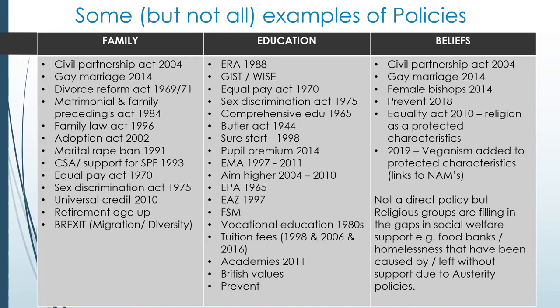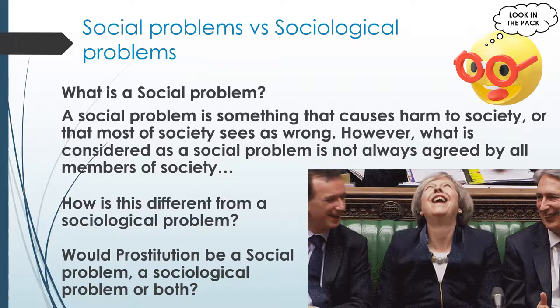For beliefs, there isn't a massive amount of direct policy overlap with religion, but there are some indirect connections — changes to same-sex relationships, female bishops, the Prevent policies, and the Equality Act, including the addition of veganism as a protected characteristic. Not as many policies are directly linked to beliefs, but there are some consequential impacts. For example, because of austerity, governments have cut a lot of support programs, and the Church has filled some of the gap in social welfare support, alongside the growth in food banks and homelessness.